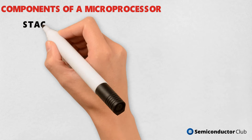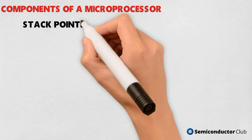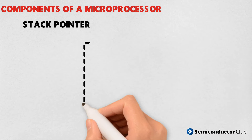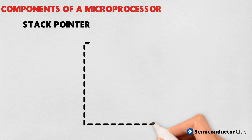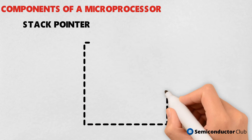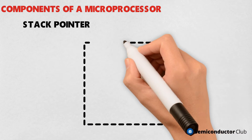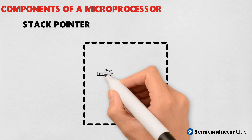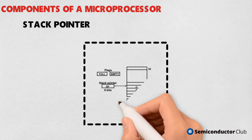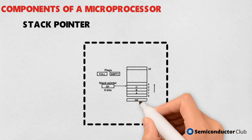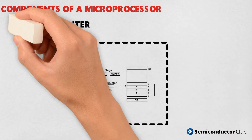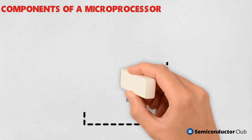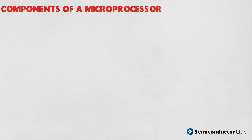Stack Pointer, SP. It is a 16-bit special function register used as a memory pointer. A stack is nothing but a portion of RAM. In the stack, the contents of only those registers are saved which are needed in the later part of the program. The Stack Pointer controls the addressing of the stack and contains the address of the top element of data stored in the stack.